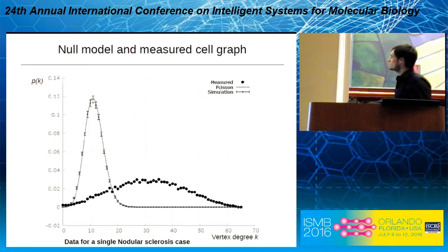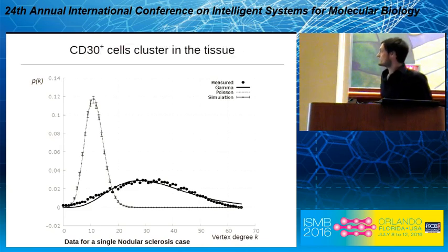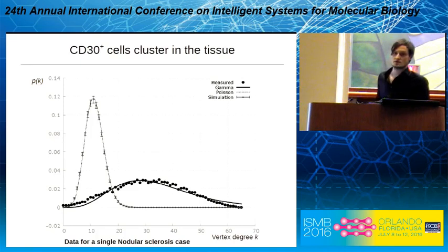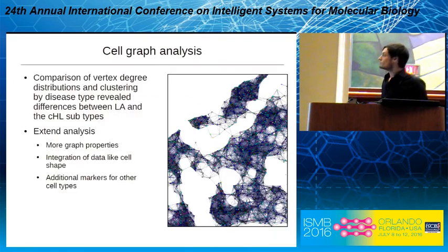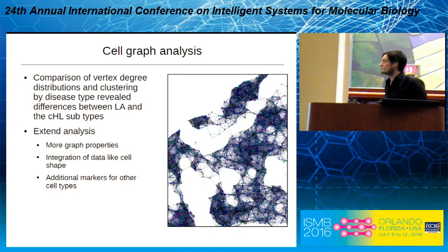Comparing this to the measured cell graph, the Poisson distribution does not fit well to model this distribution. We tried other distributions and found that the gamma distribution can in many cases model the vertex degrees of these graphs. You can also see that the CD30-positive cells cluster in the tissue — the vertex degree is shifted considerably to the right. This is a nodular sclerosis case, and these cases always have pronounced clustering. We performed analysis of these cell graphs, comparing vertex degree distributions and clustering coefficients for the different diseases — lymphadenitis and the two subtypes of Hodgkin lymphoma — and it turned out that there are significant differences in the amount of clustering between these disease subtypes.